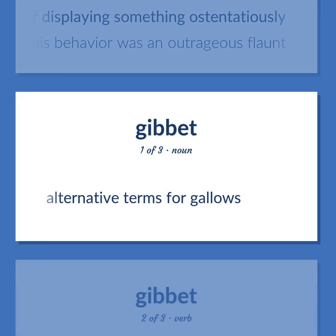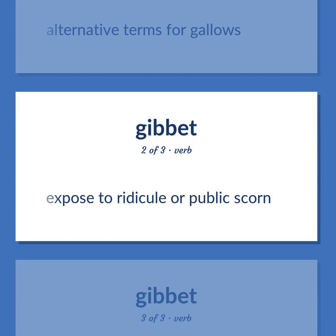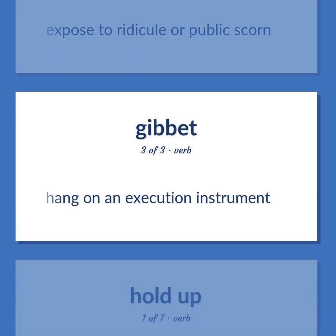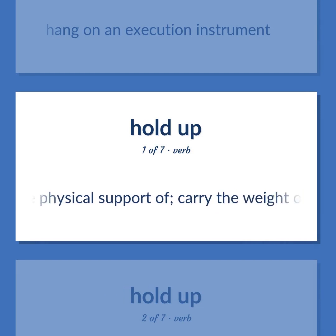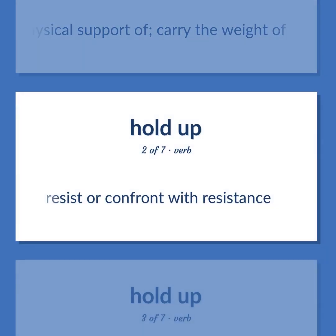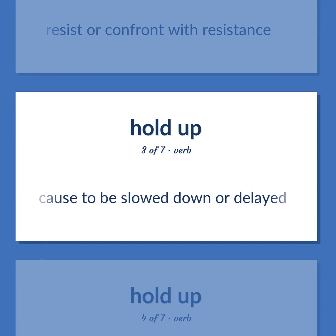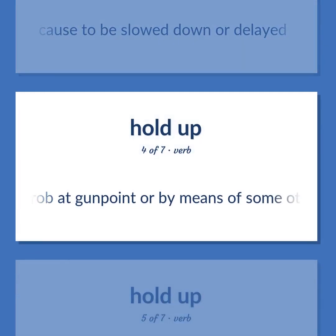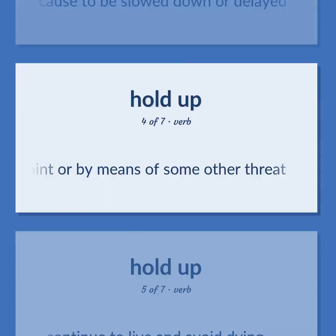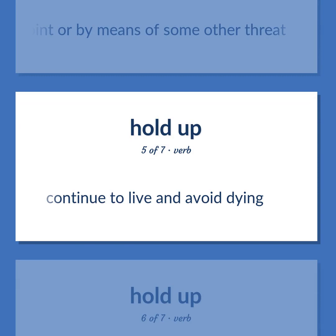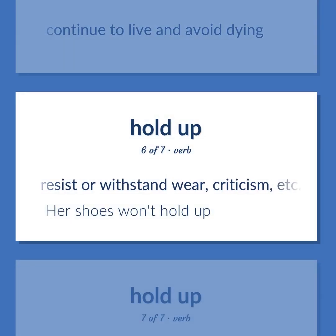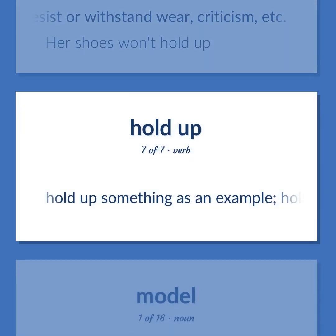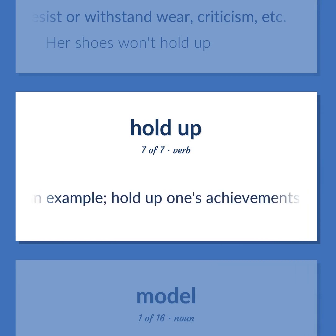Gibbet: Alternative terms for gallows. Exposed to ridicule or public scorn. Hang on an execution instrument. Hold up: Be the physical support of; carry the weight of. Resist or confront with resistance. Cause to be slowed down or delayed. Rob at gunpoint or by means of some other threat. Continue to live and avoid dying. Resist or withstand wear, criticism, etc. Her shoes won't hold up. Hold up something as an example; hold up one's achievements for admiration.